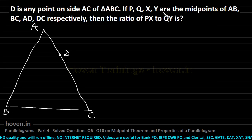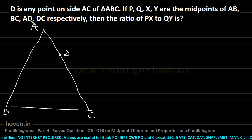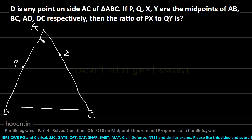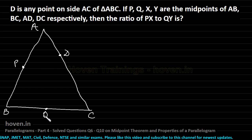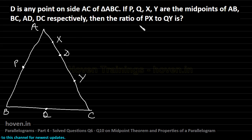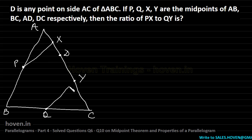P, Q, X, Y are the midpoints of AB, BC, AD, and DC respectively. P is the midpoint of AB, Q is the midpoint of BC, X is the midpoint of AD, and Y is the midpoint of DC. Segment PX joins P to X, and segment QY joins Q to Y. We have to find the ratio of PX to QY.